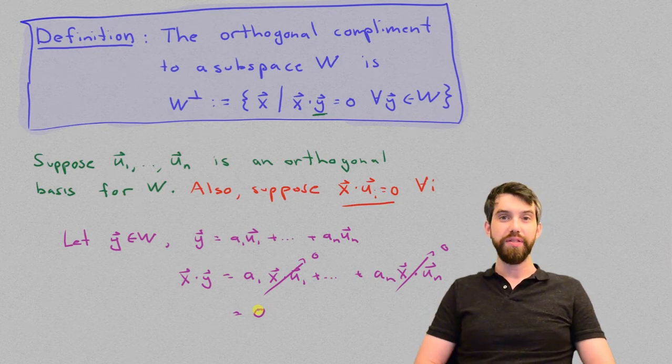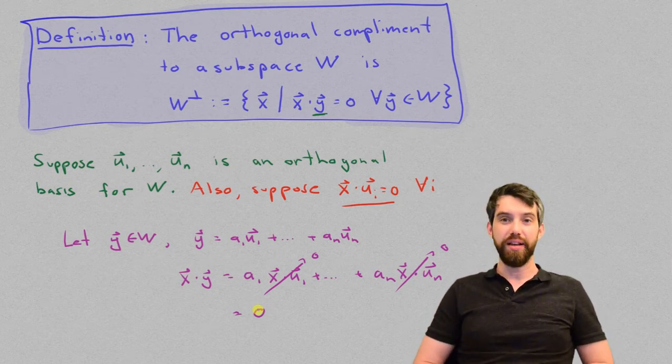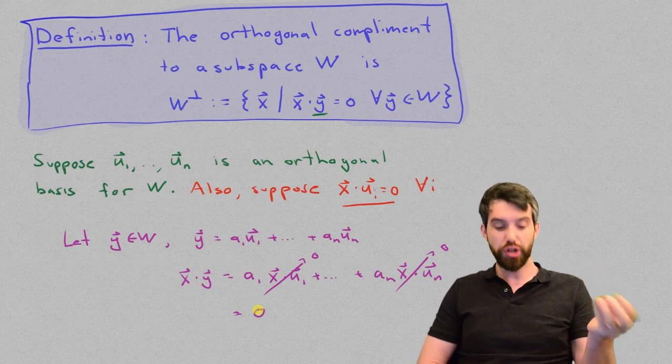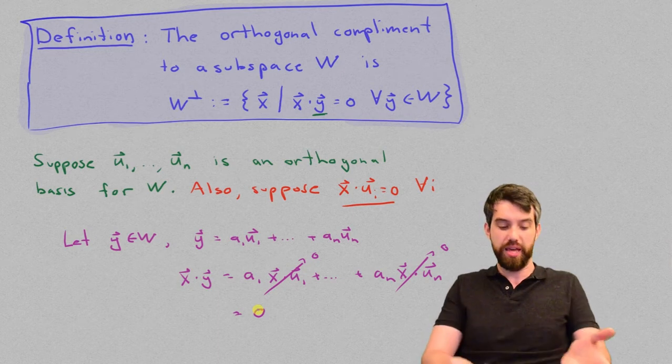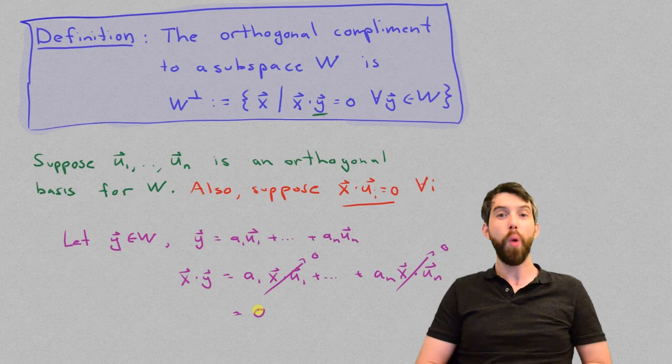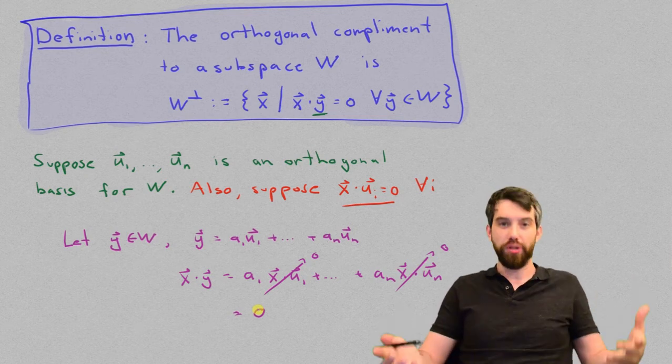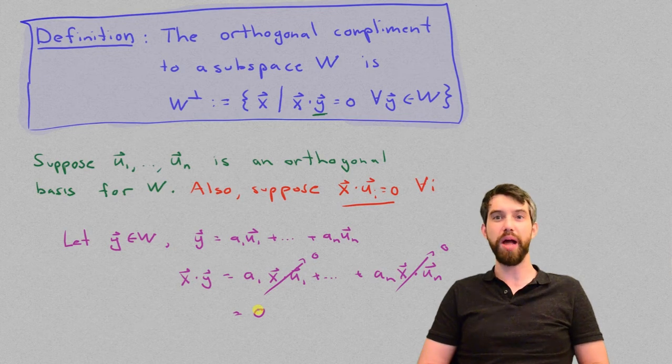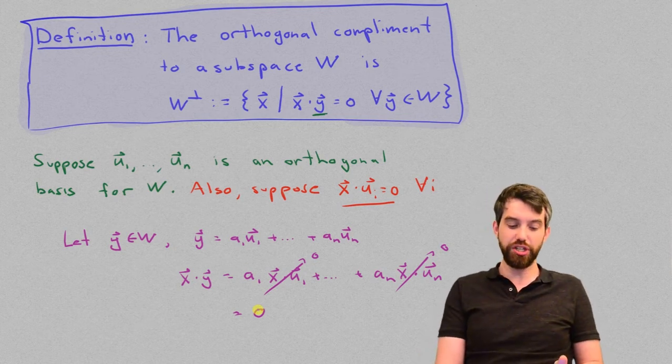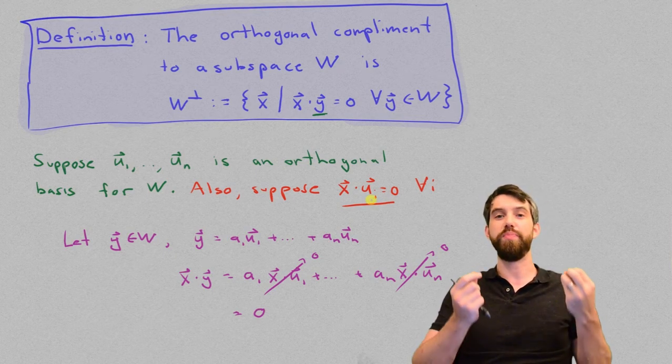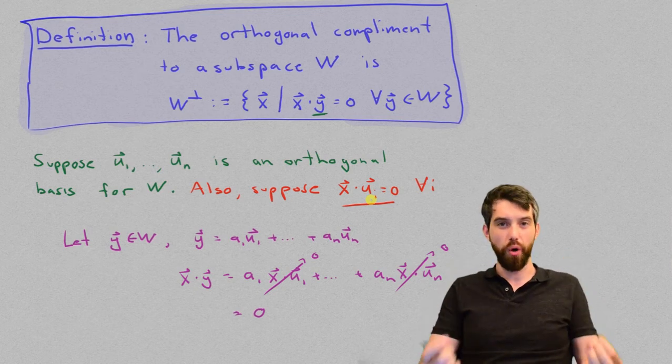In other words, the set of vectors x that satisfy this weaker condition that they're only going to be orthogonal to the basis vectors, turn out to be orthogonal to everything and therefore are inside of w-perp. And then, because the ui's are all just a special case of a generic vector in w, the containment works the other way around. In other words, we've shown that the condition of being in w-perp is equivalent to the condition of saying that the vector x is going to be orthogonal to all of the basis vectors only.